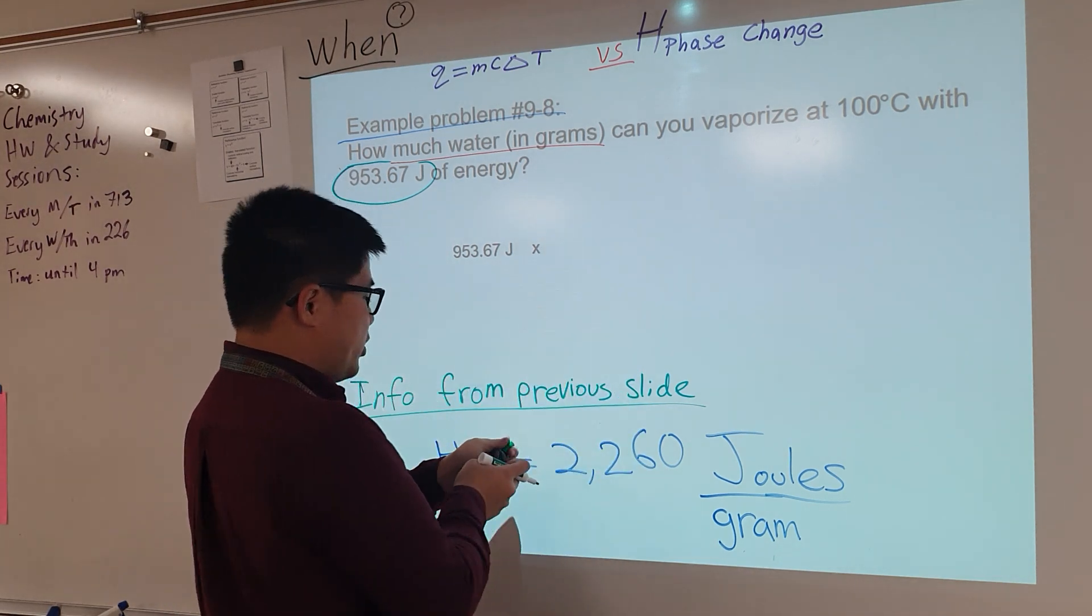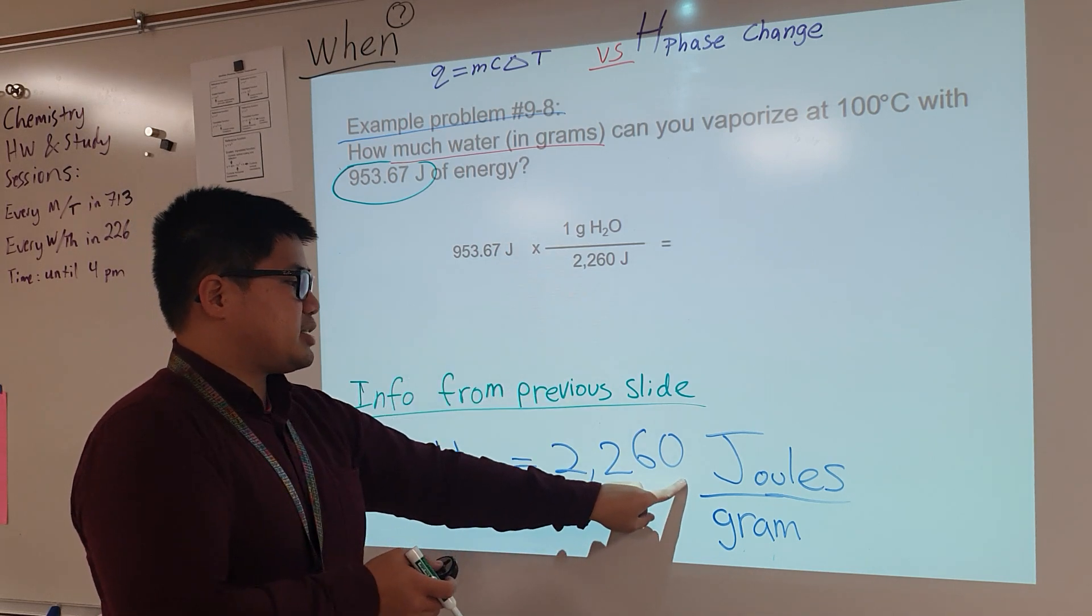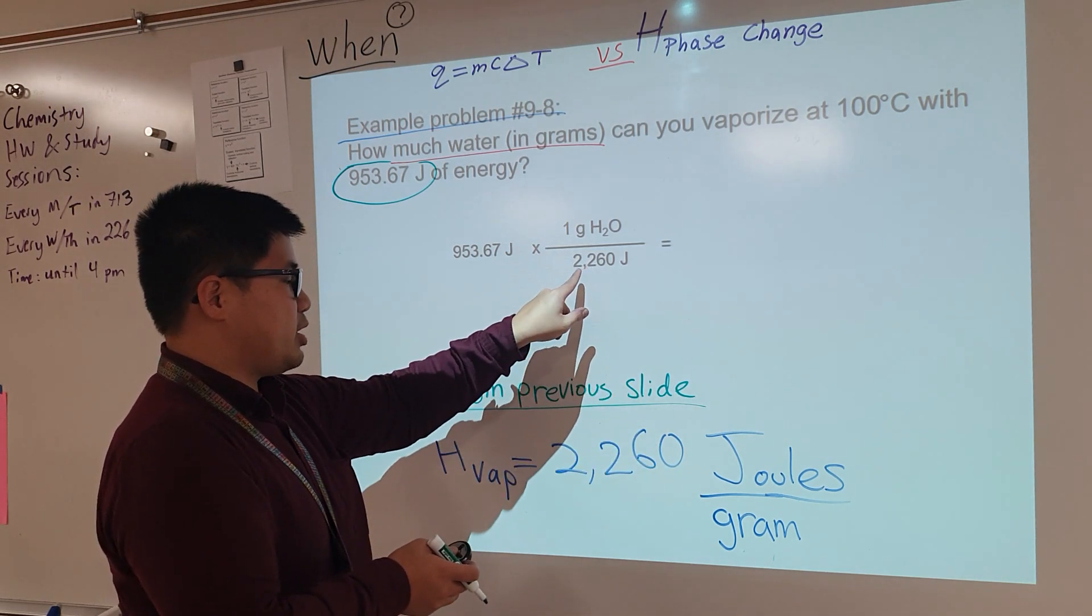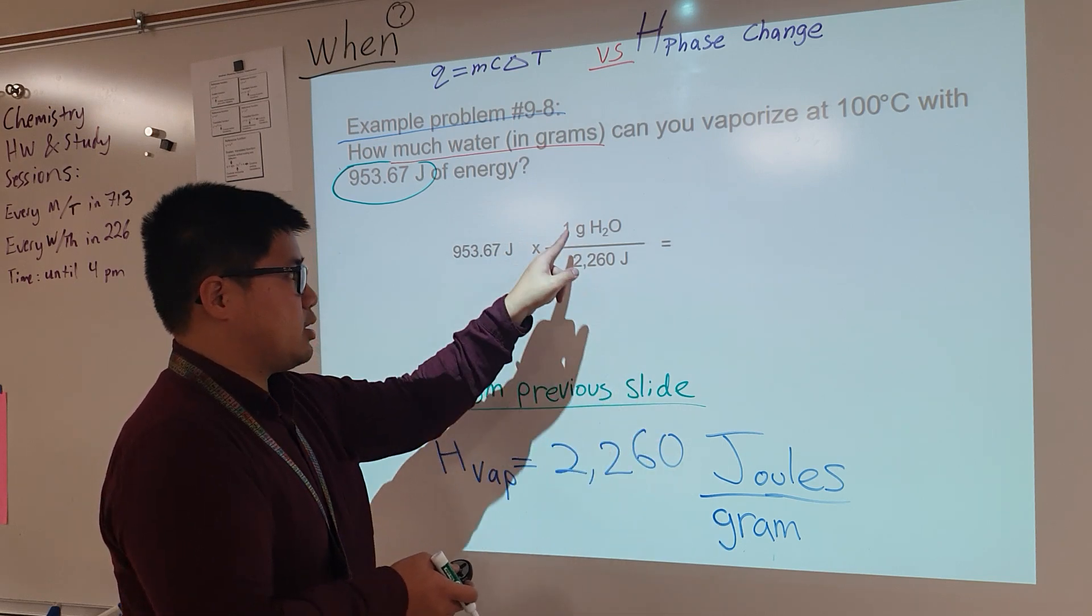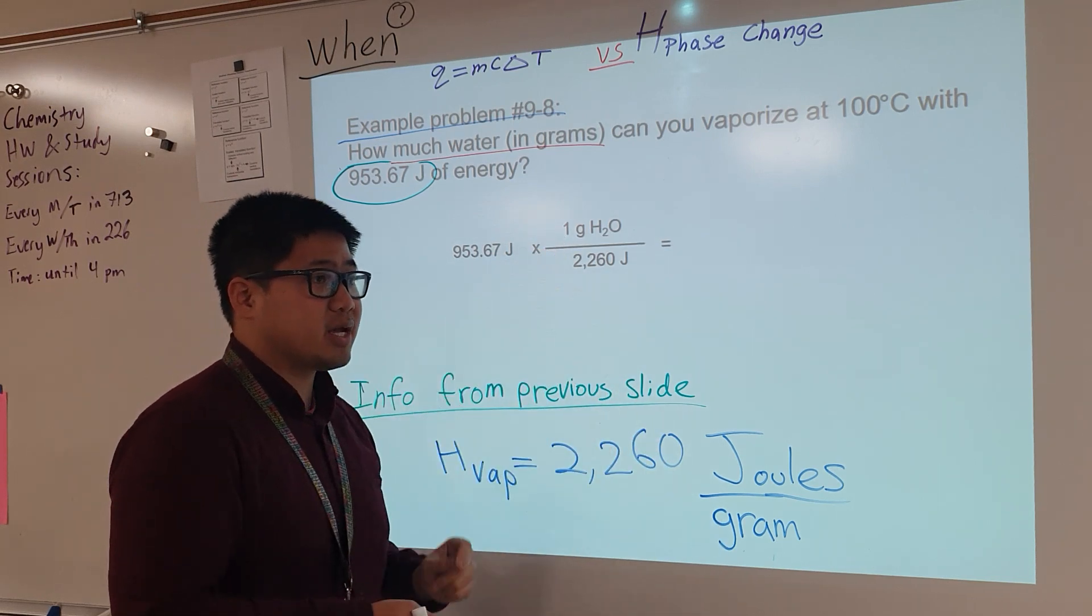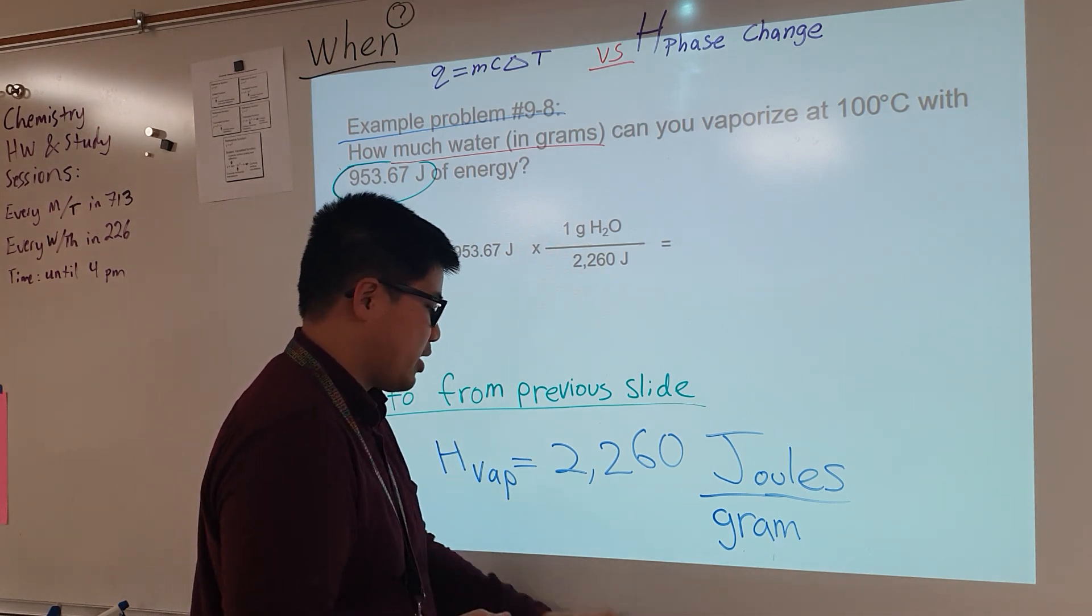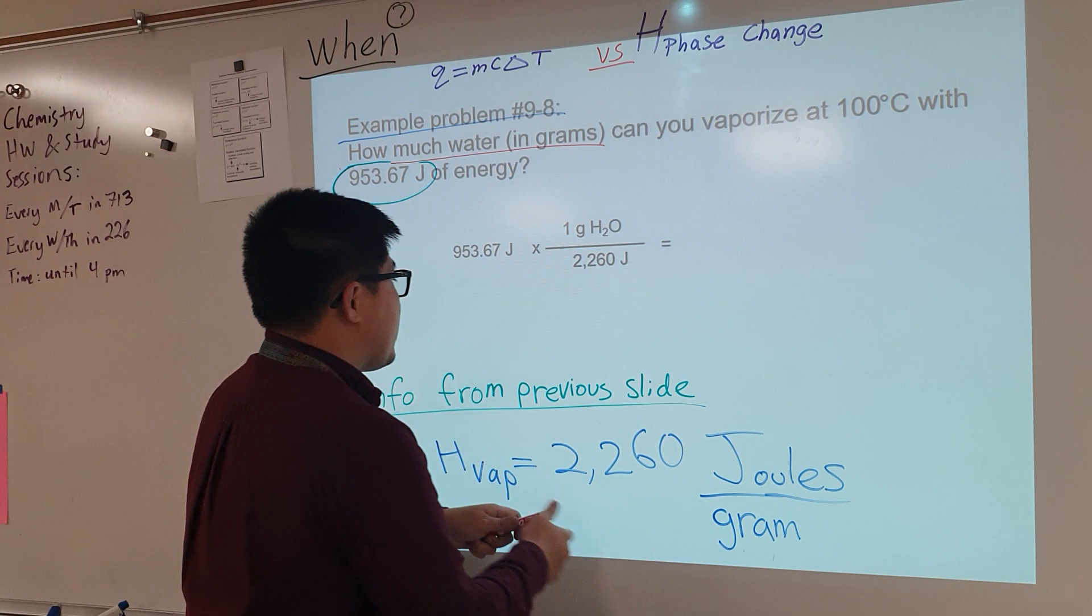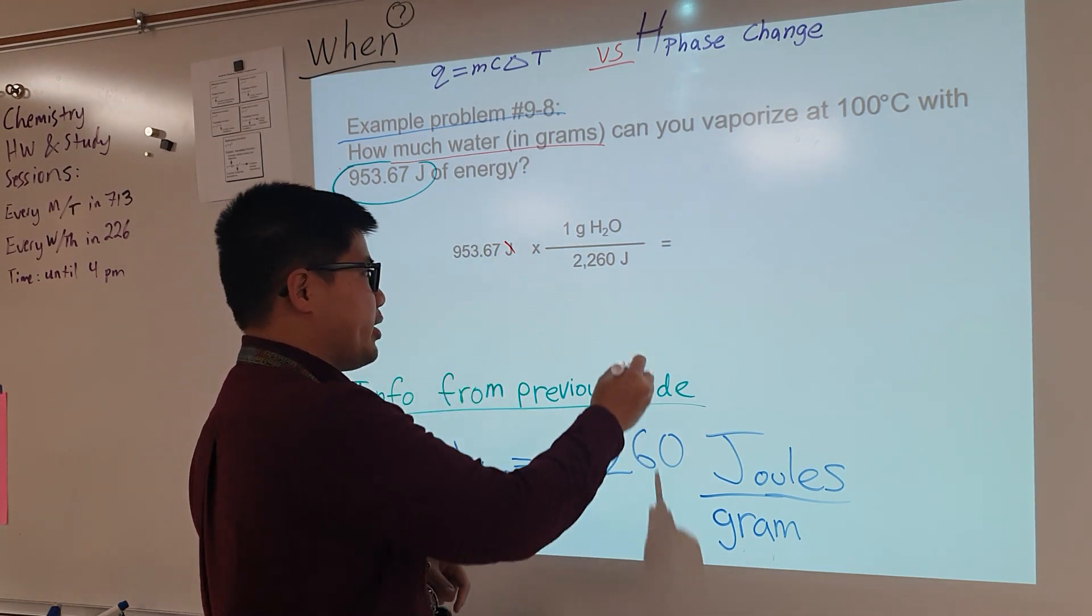So by default, we have this 2260 joules. That number is sitting here at the bottom. And the grams are sitting here on the top. Once again, the reason why is for this reason that I'm going to show you guys with my red marker. If we start out with joules on the top, we need to be able to cancel it out with some joules on the bottom.